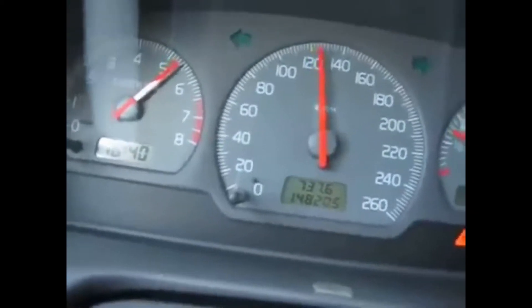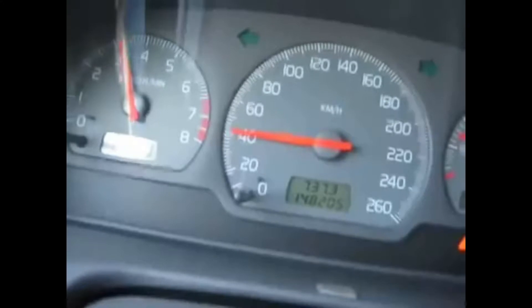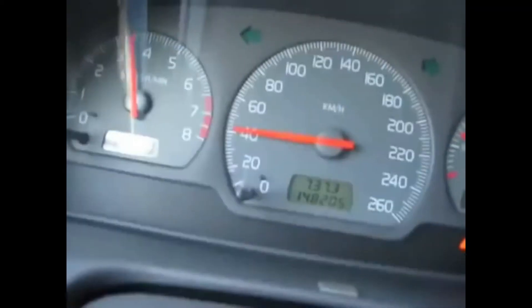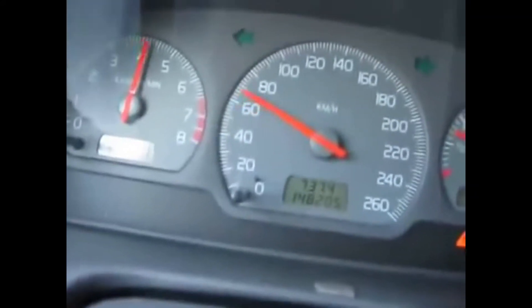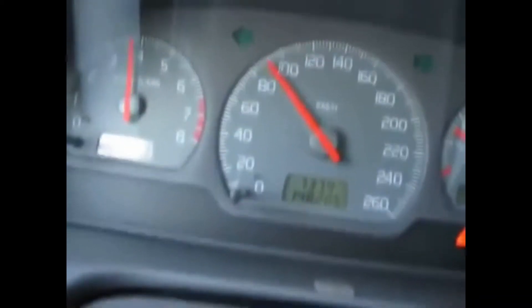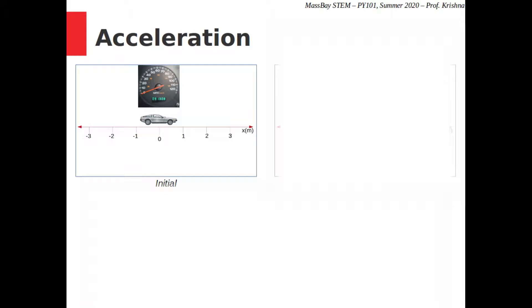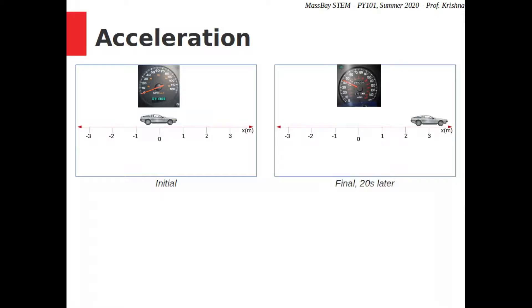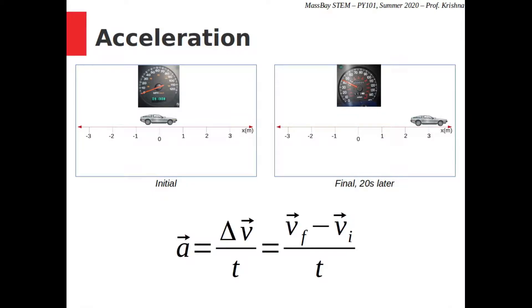We've now defined velocity as the rate of change of position. We can go one step further by defining the rate of change of velocity — how quickly the velocity of an object increases or decreases. For instance, if you're driving at 40 miles per hour and ease on the gas pedal, your velocity gradually increases. But if you floor the gas pedal, your velocity leaps up much more quickly. The rate of change of velocity is called acceleration. We calculate it by taking the difference in two velocities — v final minus v initial — and dividing by time.